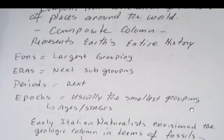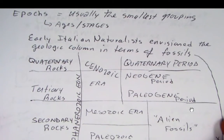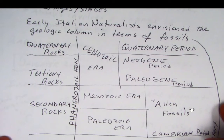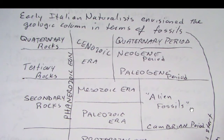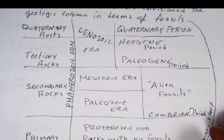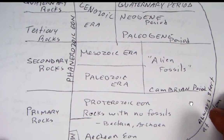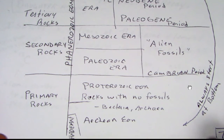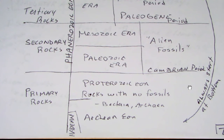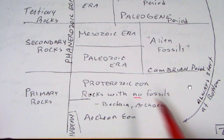If we look back at some of the early ideas on geologic time, it was really from some Italian naturalists who envisioned the geologic column in terms of fossils — the presence or not the presence of fossils. Based on that, they had these primary rocks. We always want to start at the bottom and work our way up. These Italian naturalists had ideas of primary rocks — rocks with no fossils whatsoever.